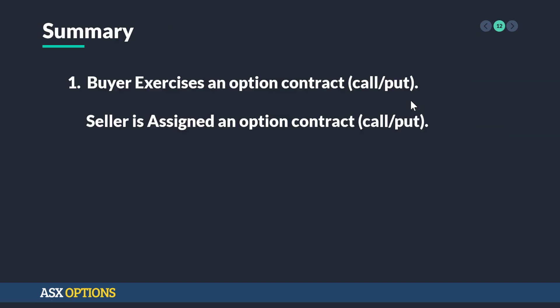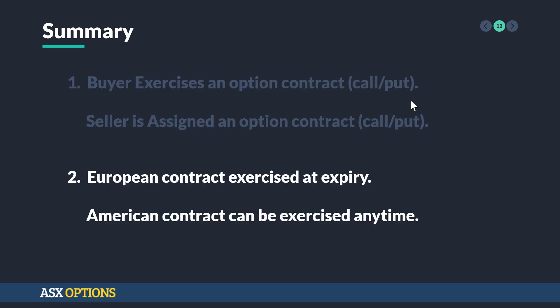In summary: if the buyer exercises an options contract, then the seller is assigned the option contract. A European contract must be exercised at expiry, whereas an American contract can be exercised anytime.